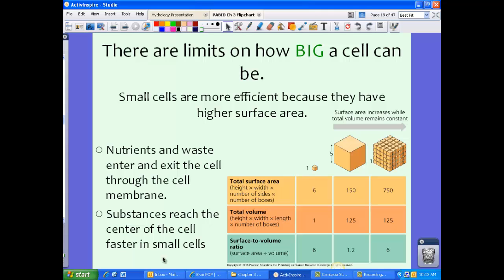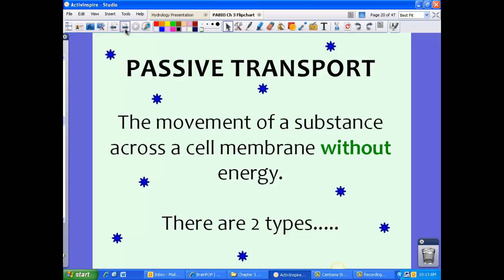So in essence, those chemical reactions might not take place as fast as they need to be. So remember, there's a limit on how big a cell can be for efficiency, basically to make sure that the substances reach the organelles faster in those small cells. Keep that in mind as we move through this lesson on cell transport.